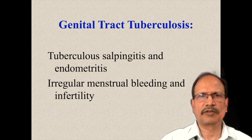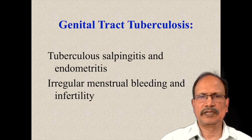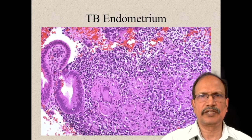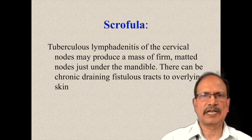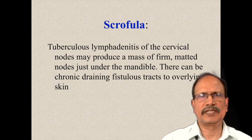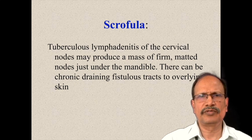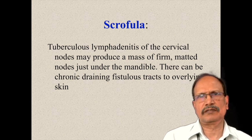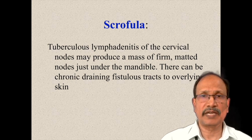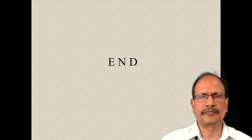Genital tuberculosis is always secondary tuberculosis and it produces salpingitis and endometritis, which presents with irregular menses and infertility. One of the steps in infertility investigation is to exclude the possibility of genital tuberculosis. This shows endometrial scrapings with granuloma formation and endometrial glands. Scrofula is lymphadenitis involving the cervical group of lymph nodes, which are firm and matted, and they produce chronic draining fistulas — undergoing necrosis to produce draining sinus tracts over to the overlying skin. The ulcers of the skin in tuberculosis have what is known as undermined edges, which is very typical of tuberculosis variety of ulcers. Thank you.